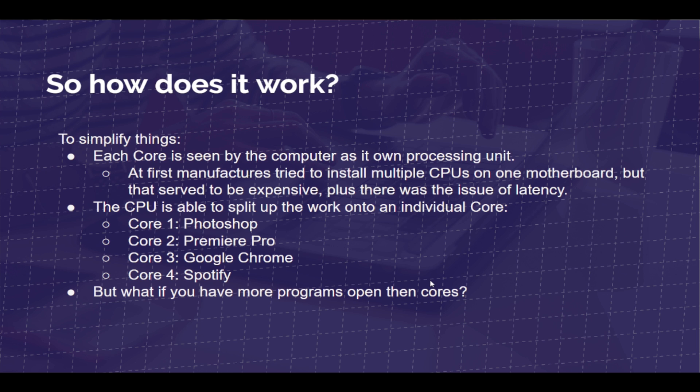So how do cores work? To simplify things, each core is seen by the computer as its own processing unit. At first, manufacturers tried to install multiple CPUs on one motherboard — building a larger motherboard with more CPU slots — but that turned out to be expensive, plus there was the issue of latency. Instead, they were able to internally alter the CPU to have extra cores. The CPU is able to split up the work onto individual cores: core one handles Photoshop, core two handles Premiere Pro, core three handles Google Chrome, core four handles Spotify. This allows you to divide the work, and each core handles a specific program.